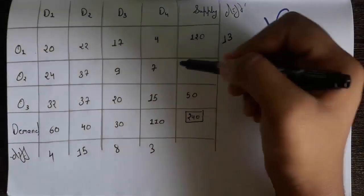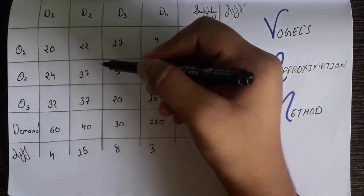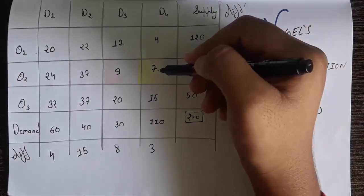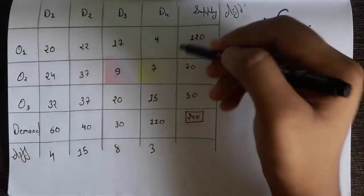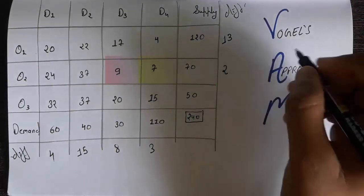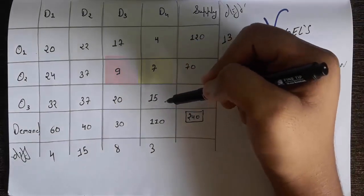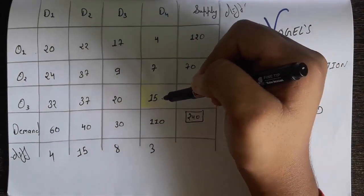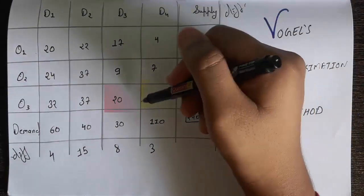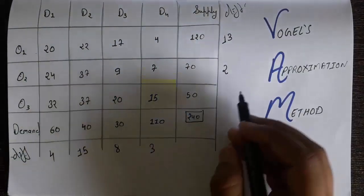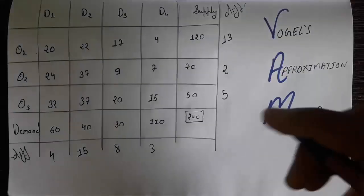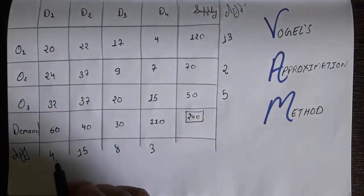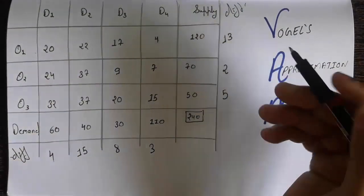In row O2, the four numbers are 24, 37, 9, and 7. The smallest number is 7, and the next number is 9, so the difference is 9 minus 7, which equals 2. In row O3, among 30, 32, 37, 9, and 15, the smallest number is 15 and the number before that is 20, so 20 minus 15 equals 5. Now we look for the largest difference among all seven values: 4, 15, 8, 3, 13, 2, and 5.